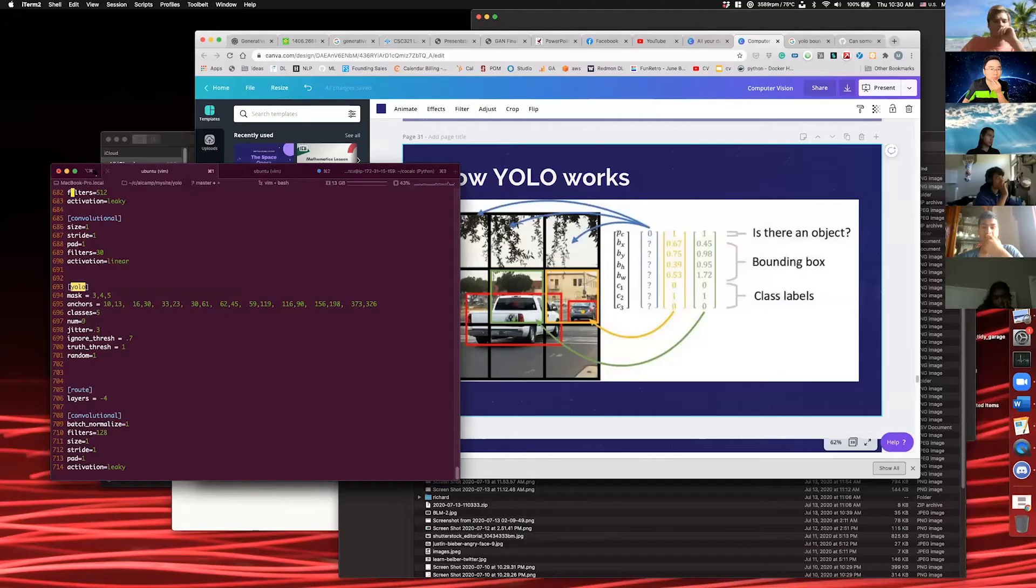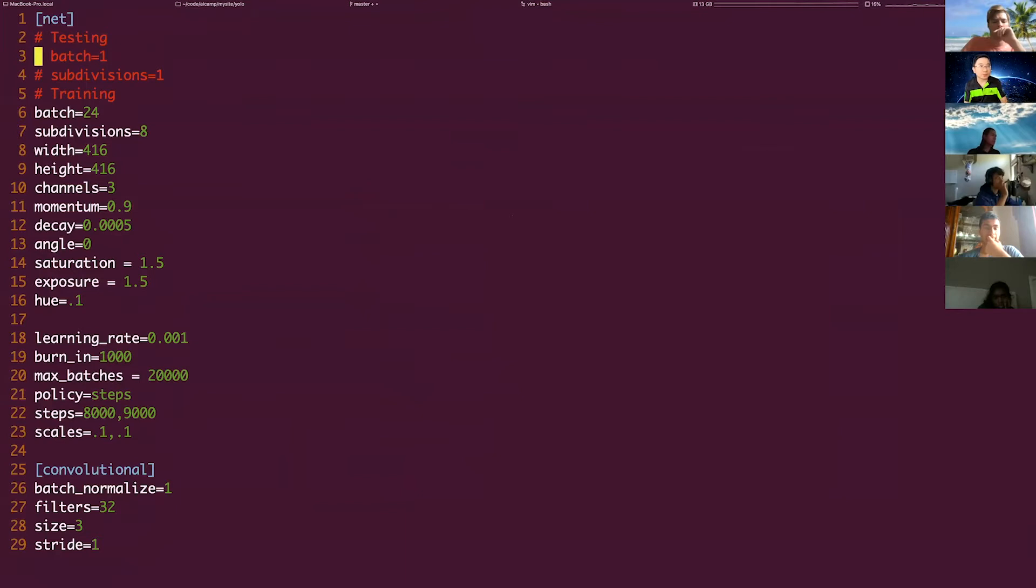So do you guys remember YOLO? This is essentially a YOLO configuration file. Do you guys know what are those things? Width and height, what are those? Image dimensions. That's right. Image dimensions. What image dimensions though? Boxes, like the boxes that YOLO divides it into.